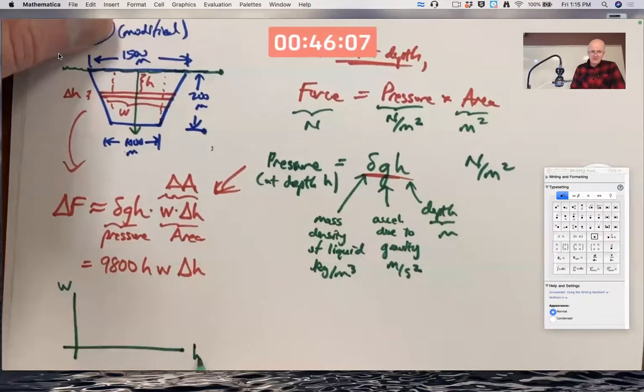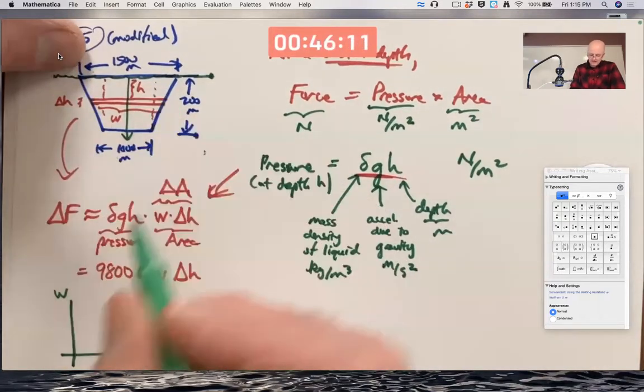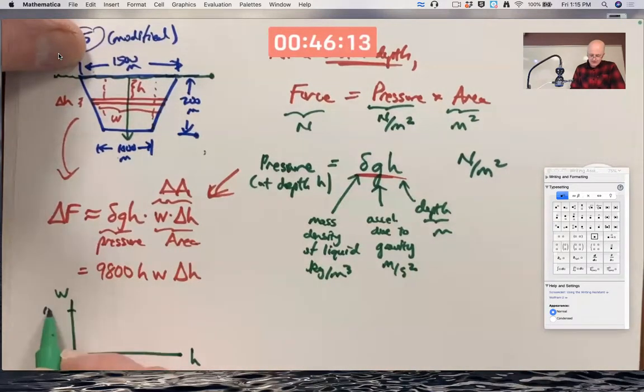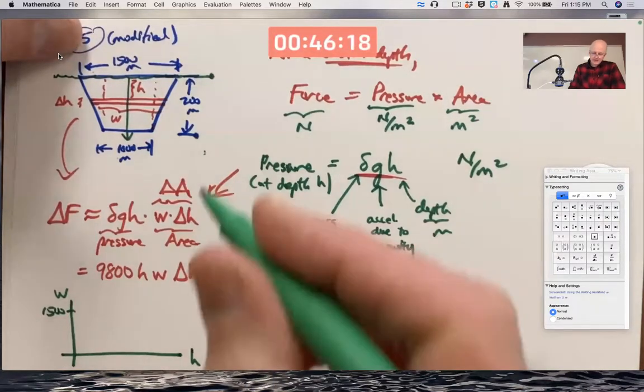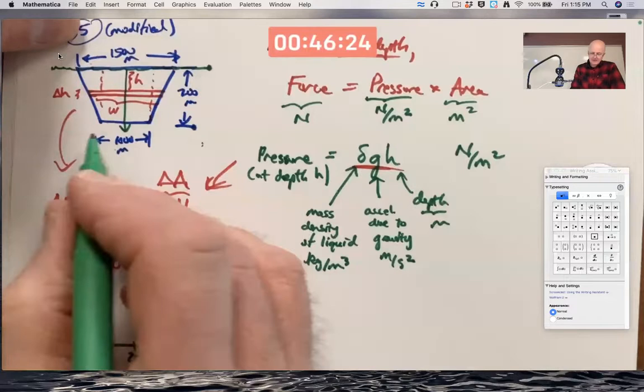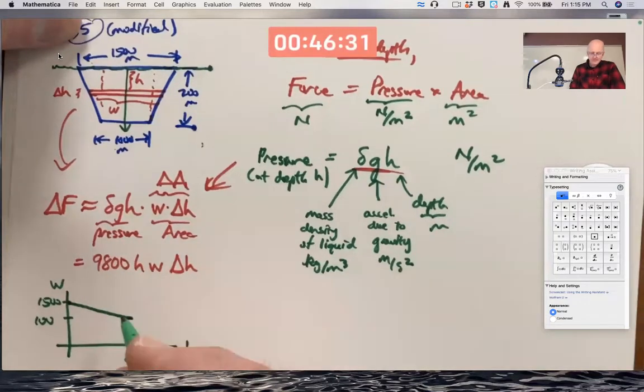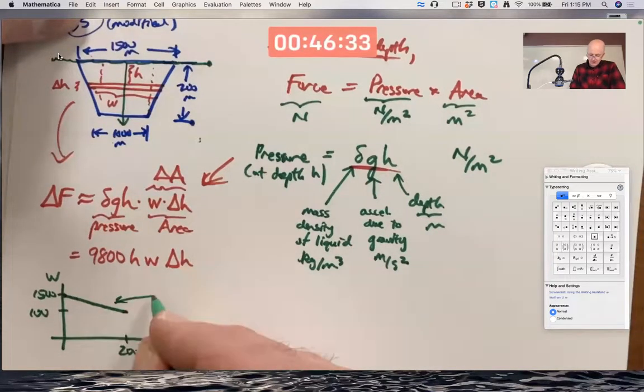W is a function of H. You can see that when H is 0, I'm at the top of the dam. W is 1,500. When H is 200, I'm at the bottom of the dam. W is down to 1,000. The sides are straight, so this is a linear function.